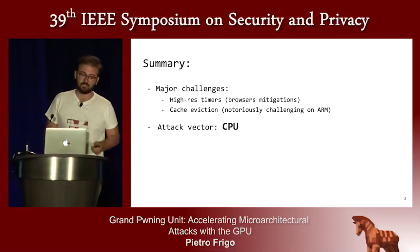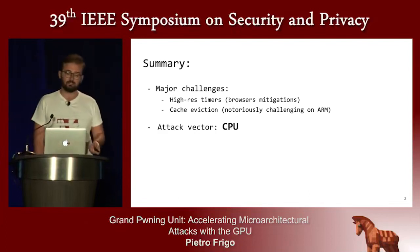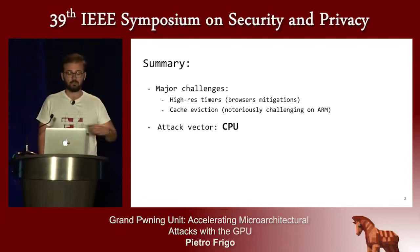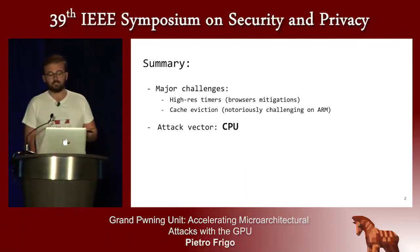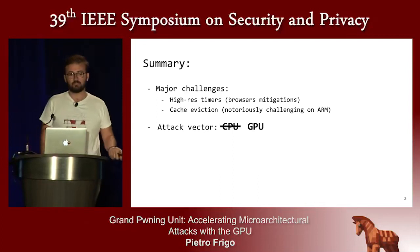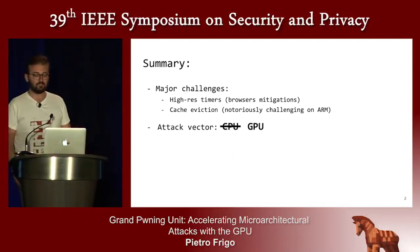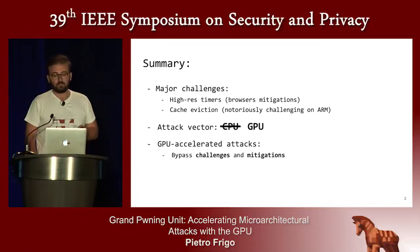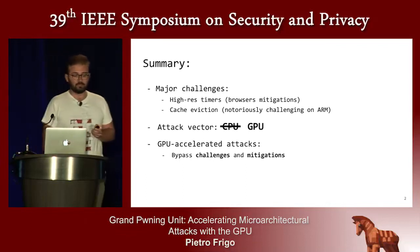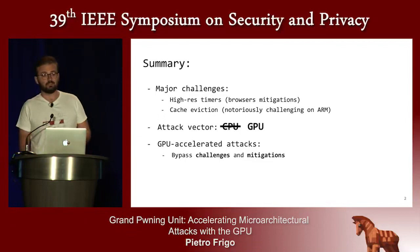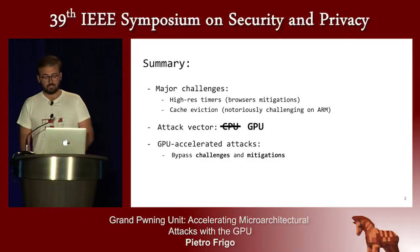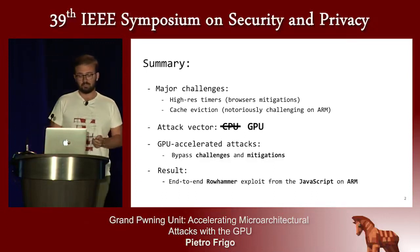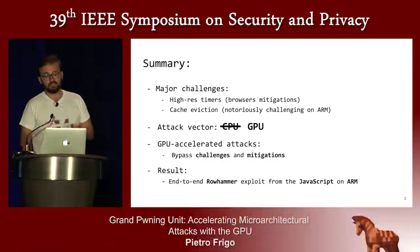What we thought was: when you look at all these attacks, the thing they have in common is that all of them use the CPU as the attack vector. So the idea we had was it's about time that someone looked at a different attack vector, and we switched the threat model from the CPU to the GPU. It turns out that once you move to the GPU we can actually implement all these attacks, and not only implement them but bypass all the challenges and mitigations that have been introduced in the past.